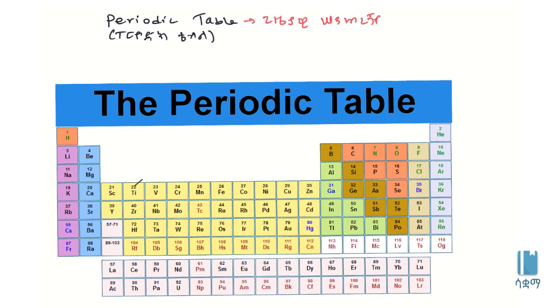In the periodic table, all elements are organized systematically. Each element is represented by its symbol, making it easier to identify and study the elements.